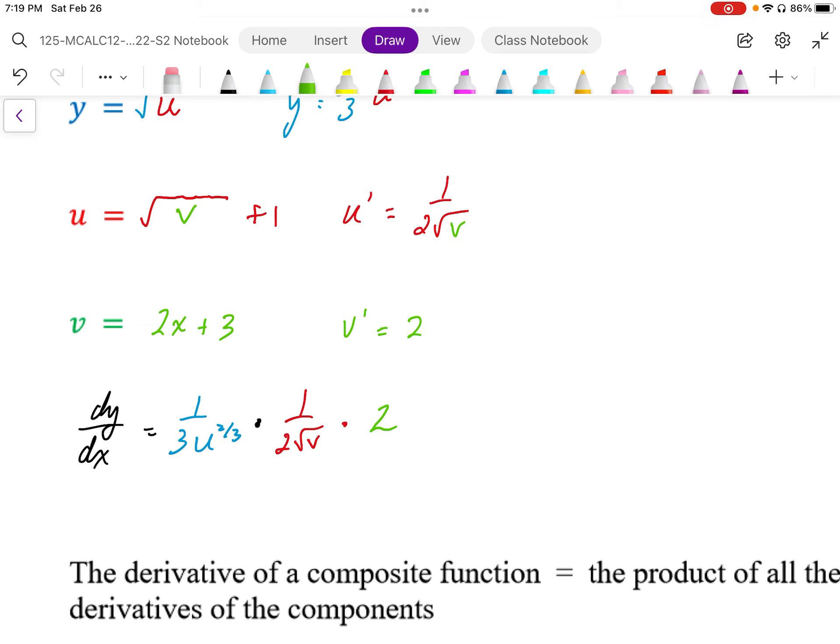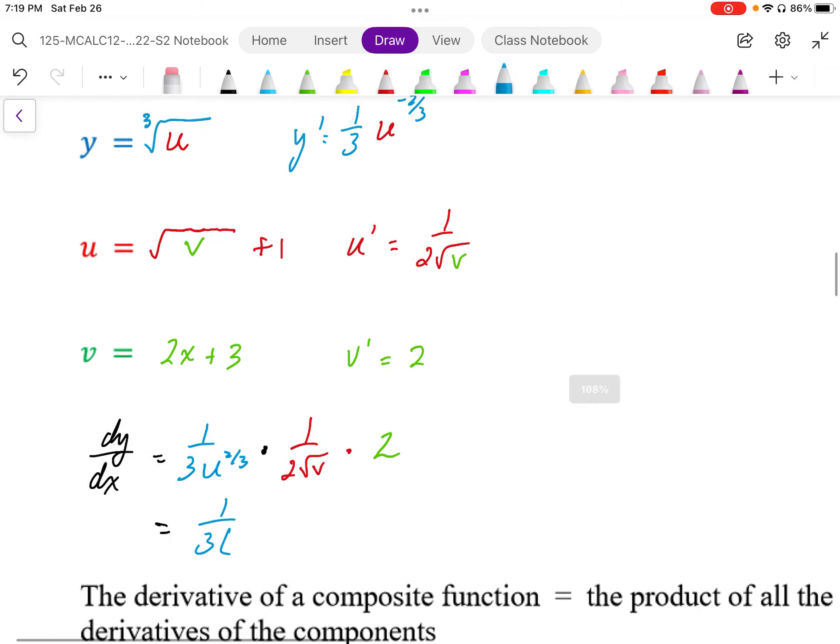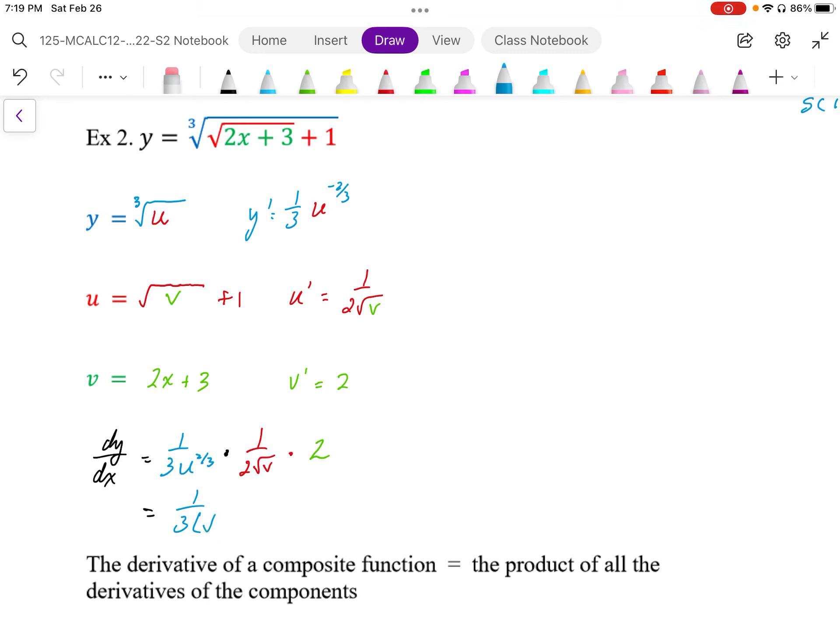When we expand this, and again, we want to try to avoid using this u notation and v notation. When we differentiate this, we want to differentiate outside in. I'm going to do this by color here. The outside function, we differentiate 1 third. And then looking at the inside expression, this is going to be root 2x plus 3 plus 1 to the power negative 2 over 3 times 1 over 2 square root 2x plus 3 times 2.